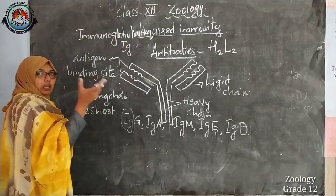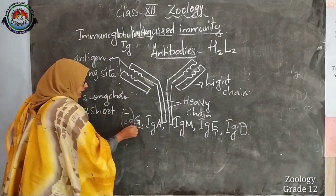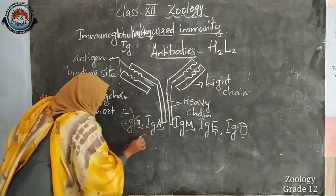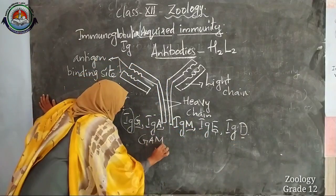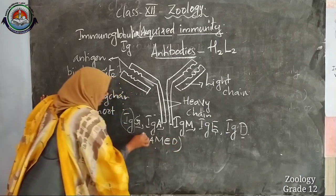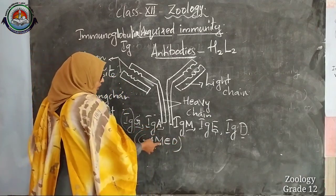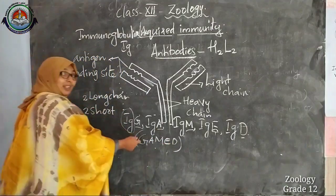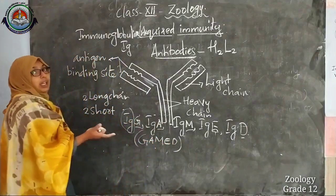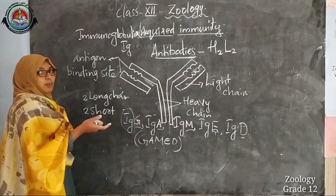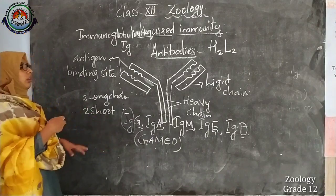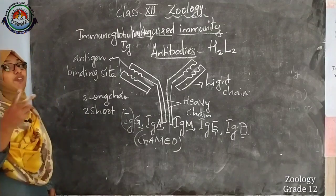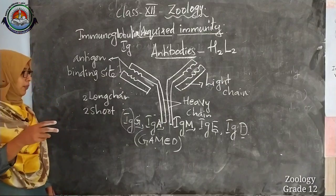To remember the five types, I will give you a tip: G, A, M, E, D — remember the word 'GAMED.' IgG, IgA, IgM, IgE, and IgD. If you remember that term, you can easily recall the different types of antibodies. They are produced in response to different pathogens entering our body.